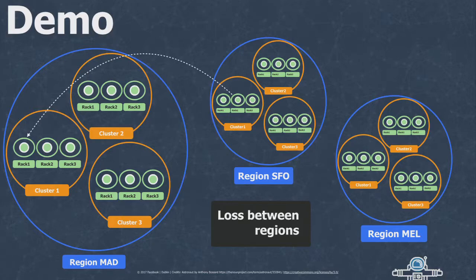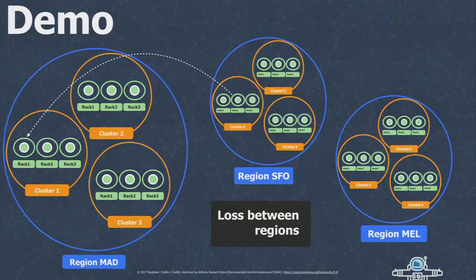The other scenario we're going to show is packet loss being detected between the Madrid data center region and SFO, while Melbourne will not have any latency issues. All of this is running in the cloud on approximately 25 virtual machines actually running on those regions — Australia, US, and here in Europe — giving us a pretty good measurement of latency on the network.